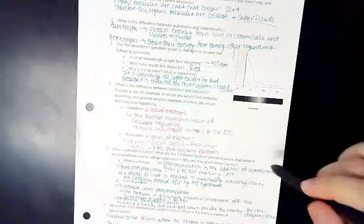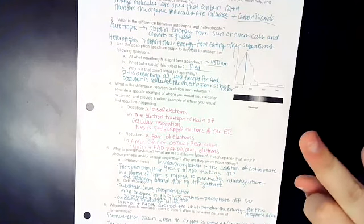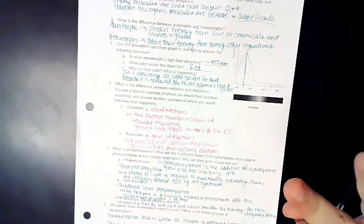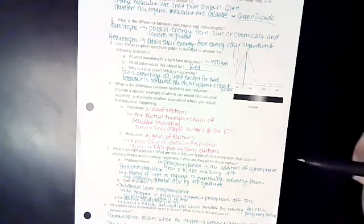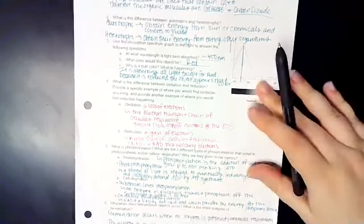So there are three different types of phosphorylation. We have photophosphorylation, substrate-level phosphorylation, and oxidative phosphorylation. And those all happen in different places in the cells.